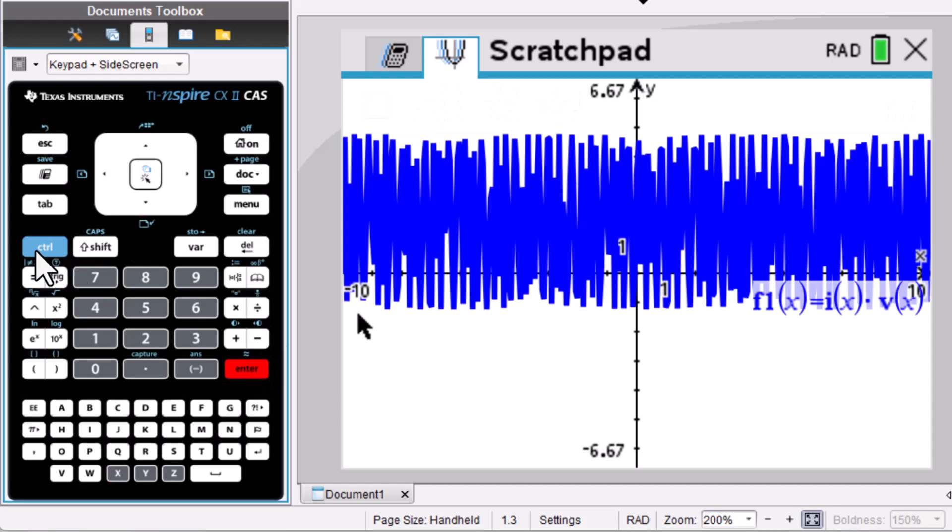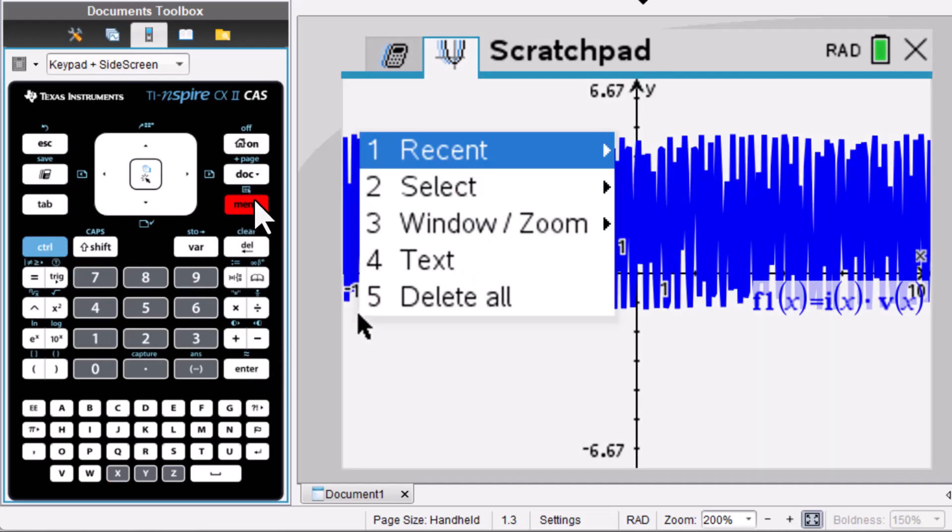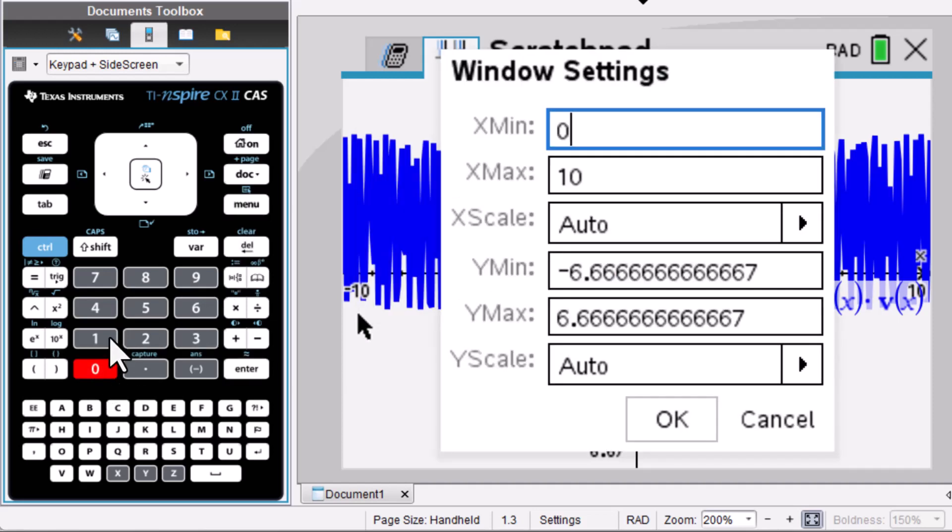Then go to control menu to change the window. Maximum is 0.02. Since this is a sine function, 0.02, let's divide it by 4.